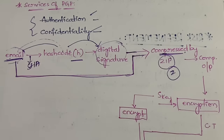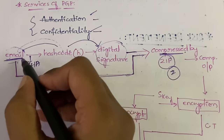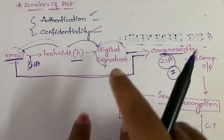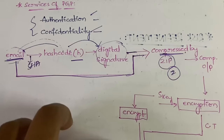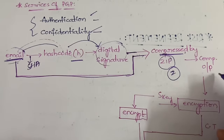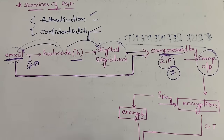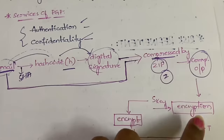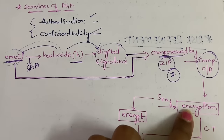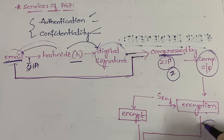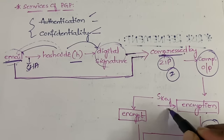Whenever you see Z in the further cases, it means data compression. After combining the digital signature and the email together, you compress them using ZIP. Once compressed, the compressed version of the data will be encrypted and a ciphertext will be generated.